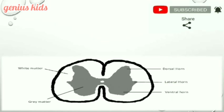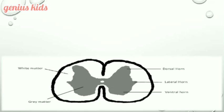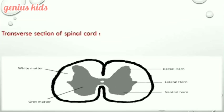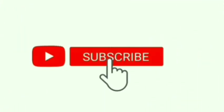Last but not least, the final slide in this session shows the transverse section of the spinal cord. As you can notice, the gray matter is on the inside and the white matter is on the outside. Thanks for watching and please don't forget to like and subscribe.